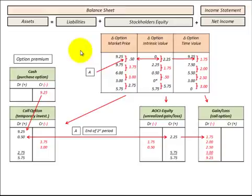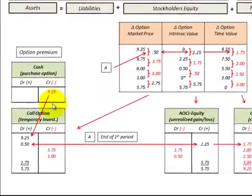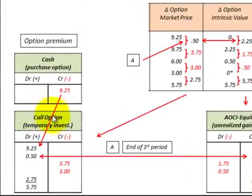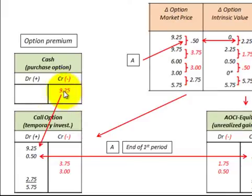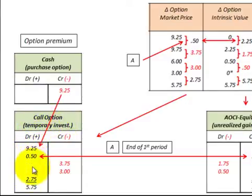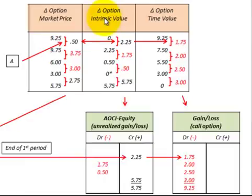This is how we record the option on our balance sheet and income statement; the entries are based on the changes calculated for each period. First, we set up the call option account as a temporary investment — an asset on the balance sheet — debiting it for the price paid for the option and crediting cash for that amount. To record market price changes, positive changes are debited to the call option account and negative changes are credited, reducing the call option account.